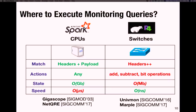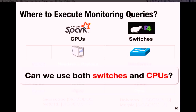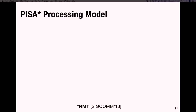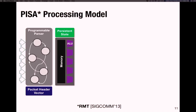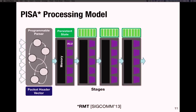Rather than focusing on just one type of device, we explored using both switches and CPUs for query execution. Before discussing how programmable switches can be used for query execution, let me give a brief overview of the packet processing model for PISA targets. Devices based on PISA — Protocol Independent Switch Architecture — have a programmable parser that can extract user-defined packet formats and store parsed values in a fixed-length packet header vector. A switch will have a pipeline with multiple stages, each with reconfigurable match-action tables composed of TCAMs, ALUs, and SRAM. At the end of the pipeline, a deparser serializes the packet header vector back into a packet.